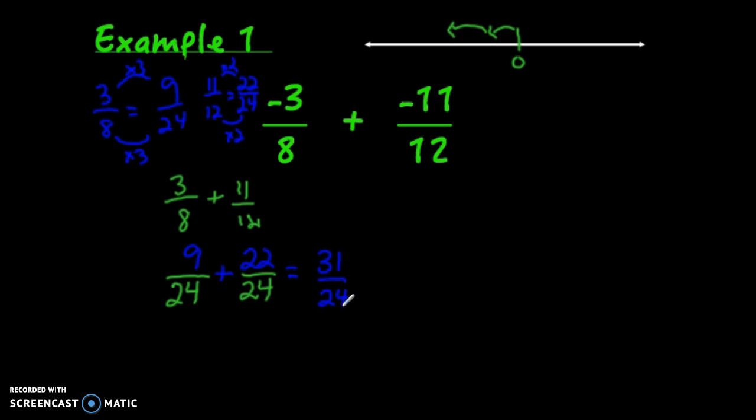That works as a final answer, but you might want to write it as a mixed number. 24 goes into 31 one whole time with 7 left over, so 1 and 7/24. But remember, these both moved left on the number line. So our final answer is negative 1 and 7/24, or negative 31/24. Either answer is acceptable.